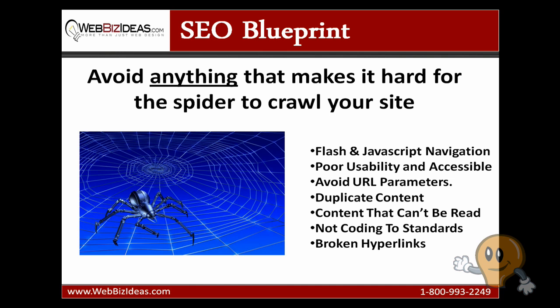Some of these are common, some may be new. Avoid Flash and JavaScript navigation. Avoid poor usability and accessibility, especially from a user standpoint. Avoid URL parameters, duplicate content, and content that can't be read by spiders. Avoid not coding to standards, and also broken hyperlinks. There's a lot that goes into infrastructure, but those are some common mistakes we see a lot.